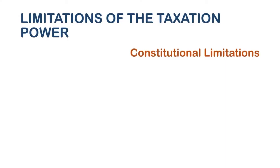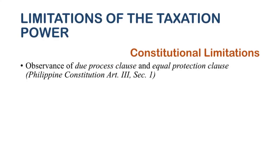There are also constitutional limitations. Although the constitution does not grant taxation power, it provides limitations on the exercise of such power. Number one, observance of due process and equal protection clauses: in the exercise of taxation power, the congress and senate must always observe due process and equal protection. For example, it would be unconstitutional for the government to arrest someone for non-payment of tax without evidence or without due process.